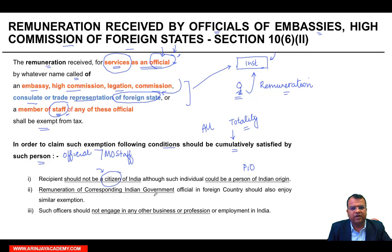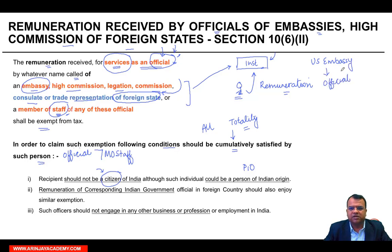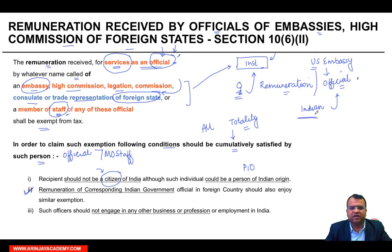Remuneration of the corresponding Indian government official in a foreign country should also enjoy similar exemption. For example, इंडिया में US embassy है, उसके officials काम कर रहे हैं. इस second condition का मतलब यह है कि अगर US में Indian embassy है और वहाँ पर एक similar official काम कर रहा है — Indian government का — उसका remuneration भी exempt होना चाहिए. अगर India exemption दे रहा है, US नहीं देता या cancel कर देता है, तो next year यह exemption भी cancel हो जाएगी.